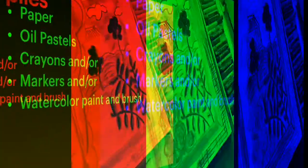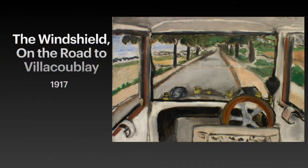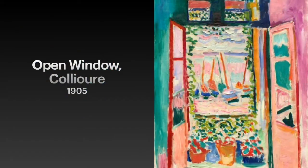Here is an example of Matisse painting what is right in front of him — this was the view from inside a car. This painting is at the Cleveland Museum of Art. Matisse's son was driving him to the airport when Matisse decided to paint the road. I hope his paint didn't spill everywhere!